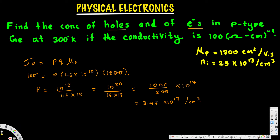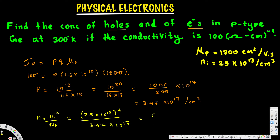To find the minority carrier (electron) concentration, we use the mass action law: n = ni² / p, where we divide the square of the intrinsic concentration by the majority concentration. For germanium, the intrinsic concentration ni = 2.5×10¹³ per cm³. So we compute (2.5×10¹³)² / (3.47×10¹⁷), which gives 6.25×10²⁶ in the numerator divided by 3.47×10¹⁷.